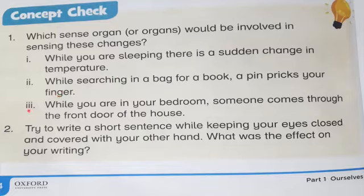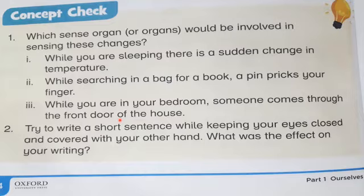Number three: while you are in your bedroom, someone comes through the front door of the house. Two sense organs are involved in sensing this change. Can you guess? The answer is eyes and ears. Very good, students! All of your answers are correct. All of you are geniuses.